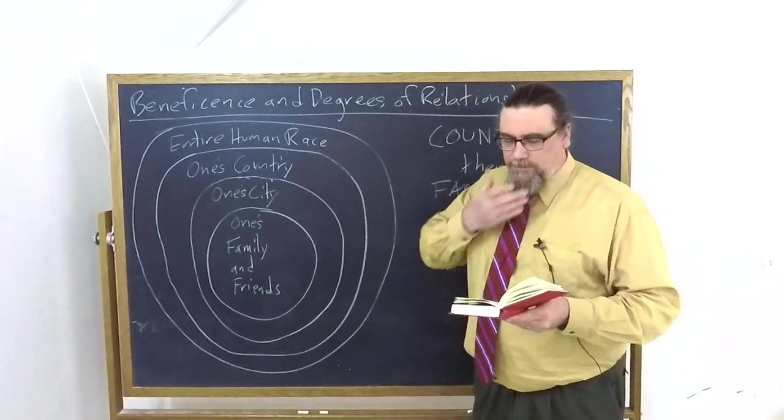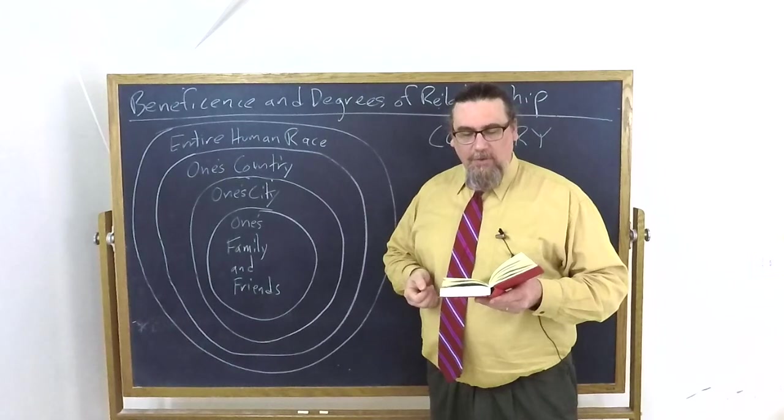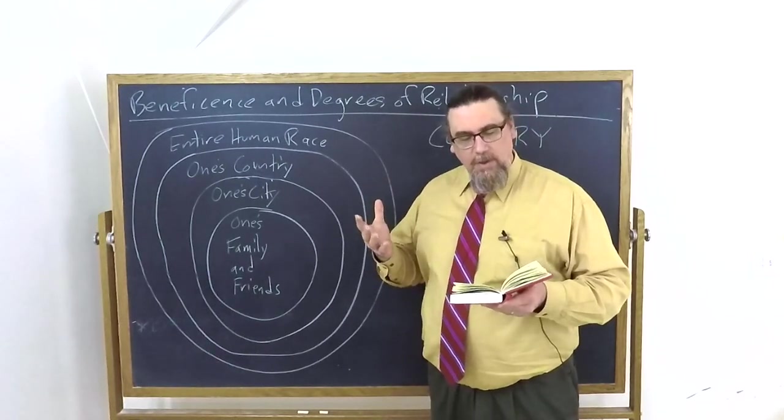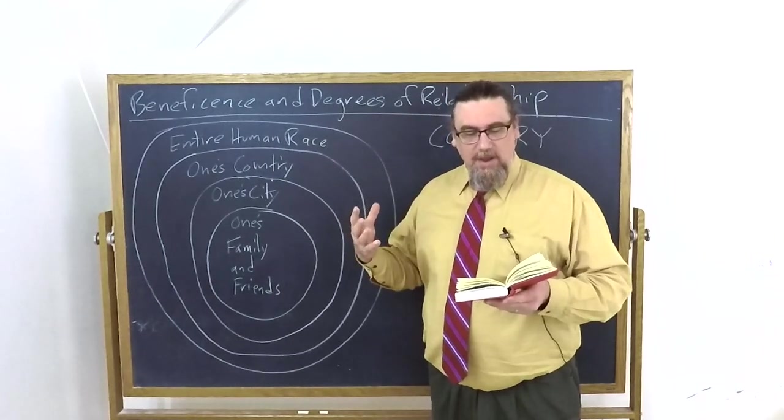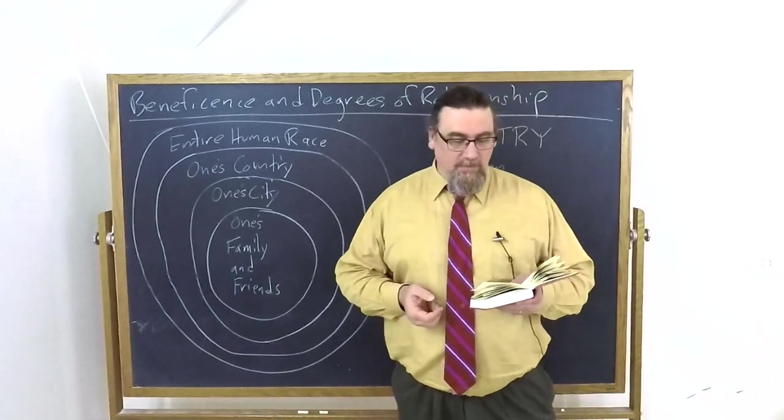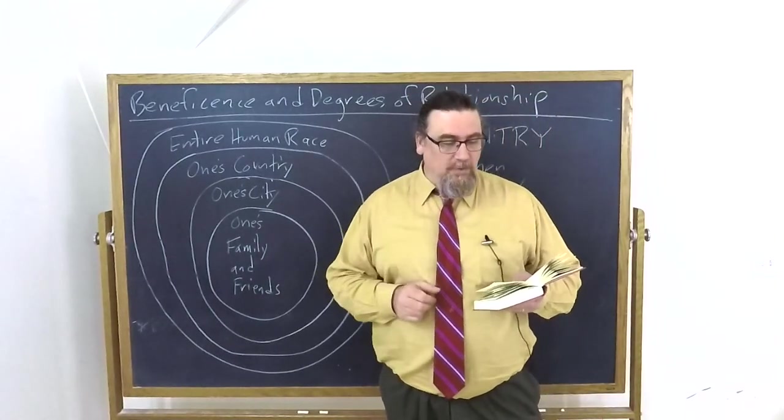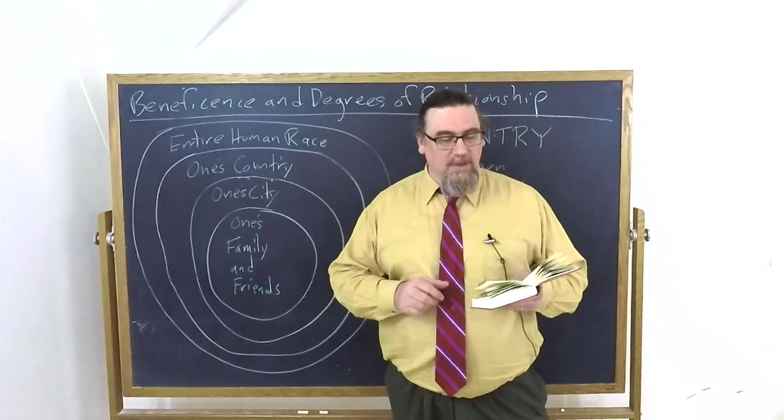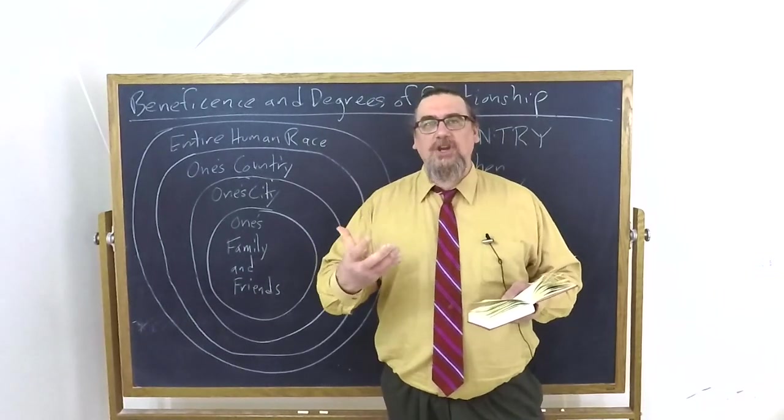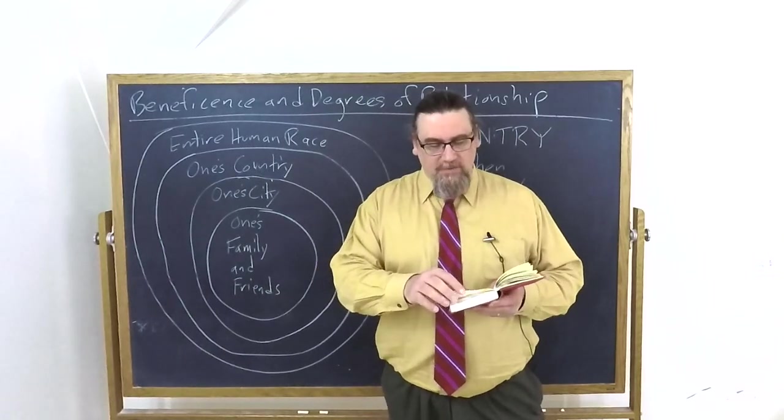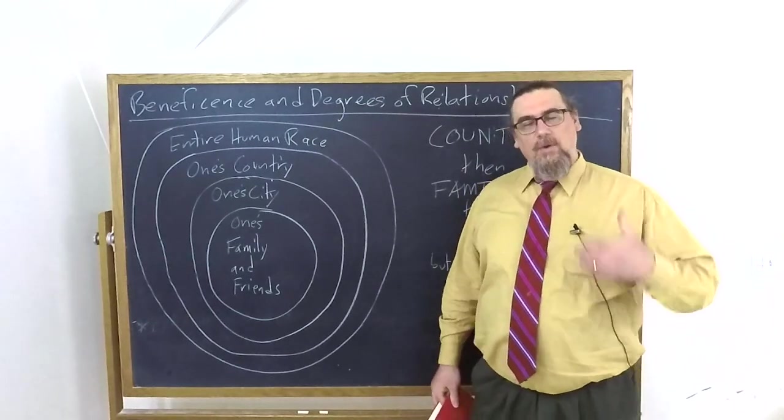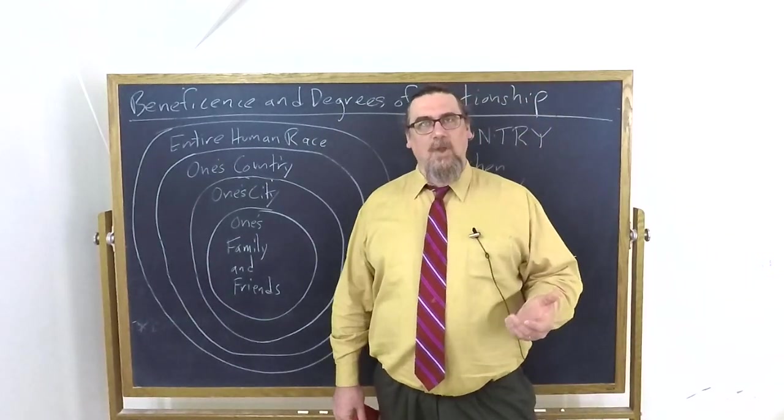So he tells us, we must trace back to their ultimate sources the principles of fellowship, that is communitas, and society, so kietas, that nature has established among human beings. And he says, the first principle is that which is found in the connection that subsists, the vinculum, the chain, the bond that exists between all the members of the human race. What is that then? What do we all have in common? You might say our DNA.